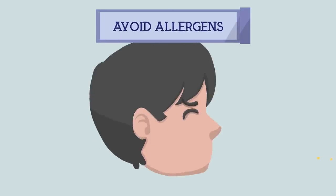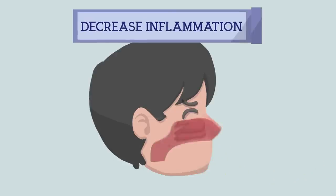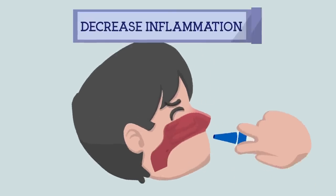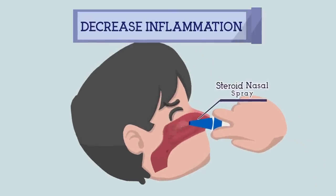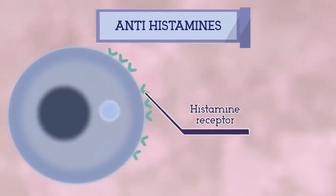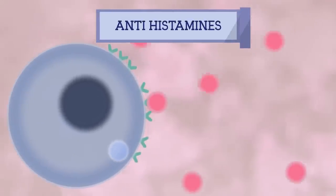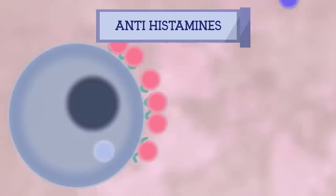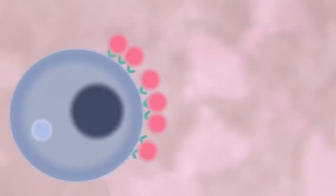1. Avoid allergens: this can be done by taking precautionary measures to avoid exposure, for example wearing face masks in pollen season. 2. Decrease inflammation: this can be achieved by steroids applied directly to the nasal mucosa. 3. Antihistamines: these target the action of histamine by blocking the histamine receptors, thus stopping the action of histamine.